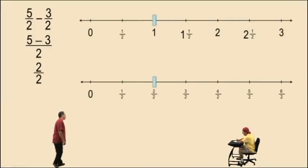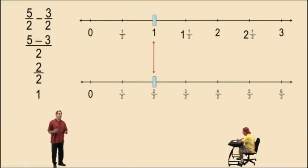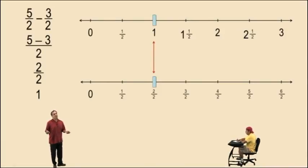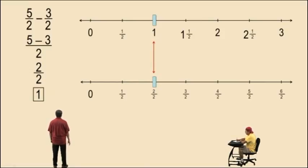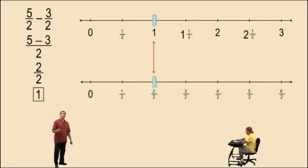But 2 halves is an improper fraction and is equivalent to the whole number 1. So essentially this is called reducing — we'll talk about reducing later in the semester. But 2 halves is equivalent to the whole number 1, so that's how we will write our answer: 1.